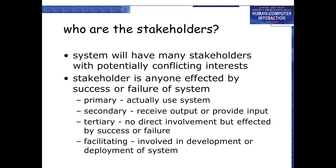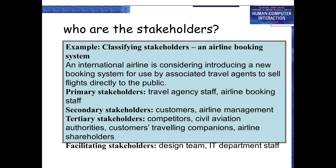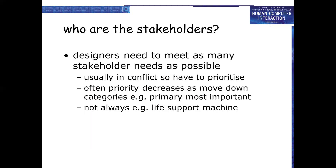Stakeholder categories: Primary — those who actually use the system. Secondary — those who receive output or provide input. Tertiary — no direct involvement but affected by success or failure. Facilitating — those involved in development or deployment of the system. Designers need to meet as many stakeholders' needs as possible. These are usually in conflict, so priority often decreases as you move down the categories.